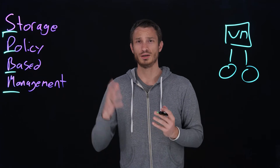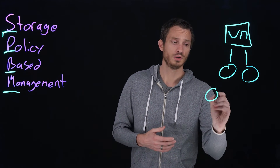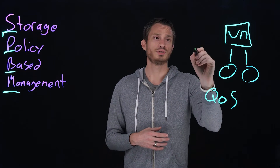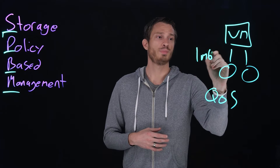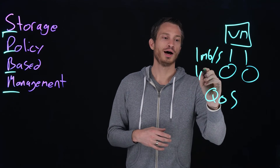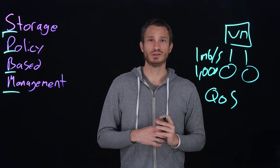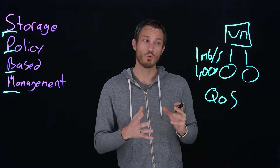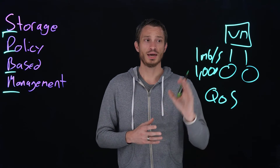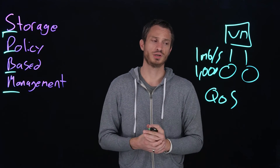What are things that we support in our storage policy-based management on the FlashArray? Things like QoS — quality of service. This allows you to put a limit of one megabyte per second, or a hundred, or a gigabyte per second on this volume, or a thousand IOPS, or both. You can set these different levels to hold back what that particular virtual machine or virtual disk more specifically can do. And this can be set in the storage policy so you can assign it en masse to a lot of virtual machines.